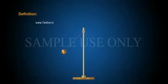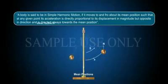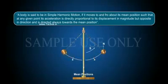Definition of SHM: A body is said to be in simple harmonic motion if it moves to and fro about its mean position such that,